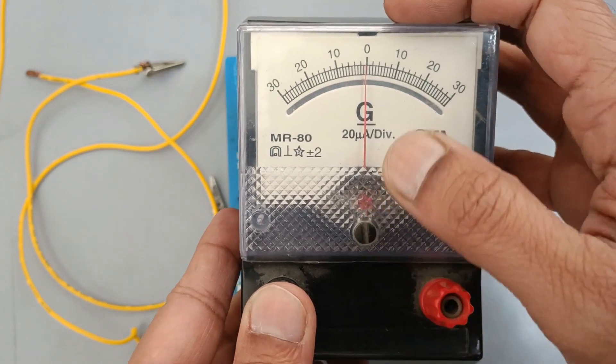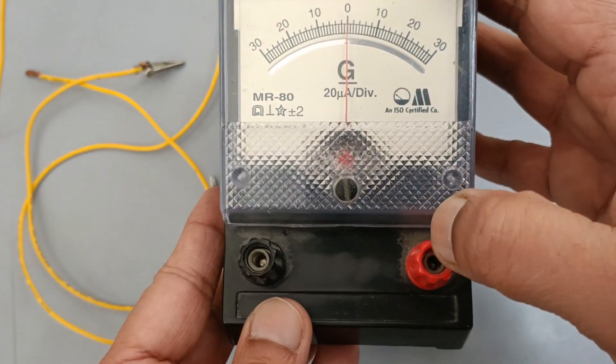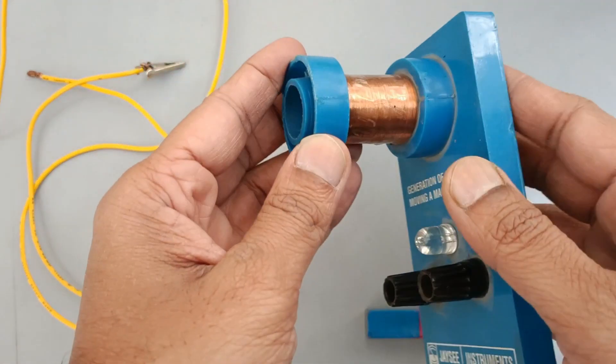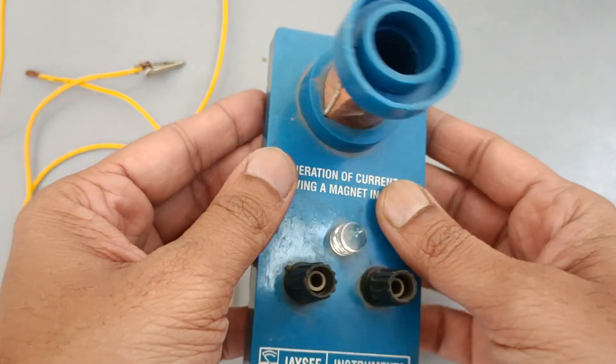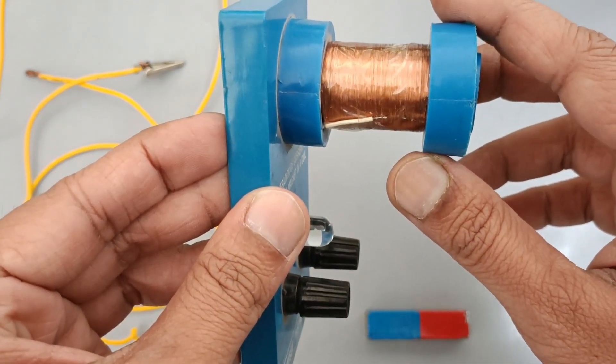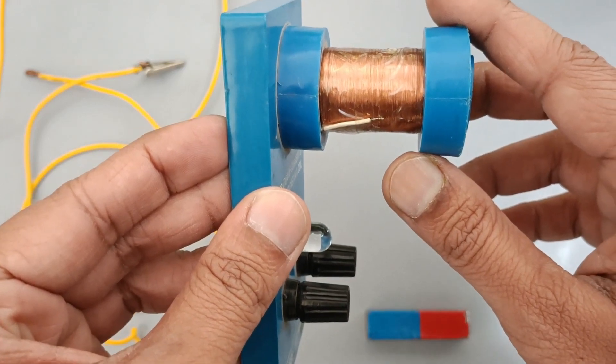Galvanometer is used to check the direction of electric current. Its least count is 20 microamperes and it can measure maximum 600 microamperes of electric current. There are about 500 turns in about 3 centimeters of this solenoid.